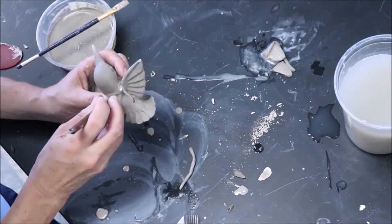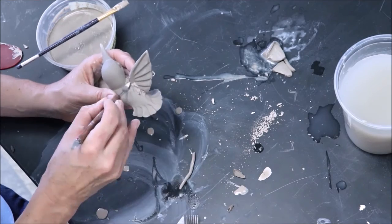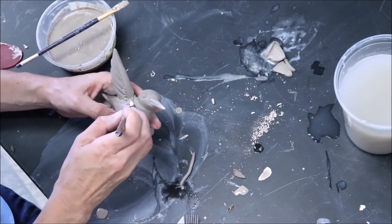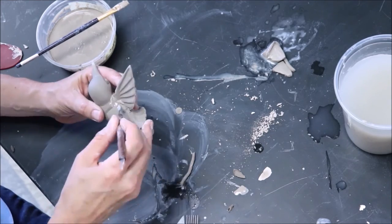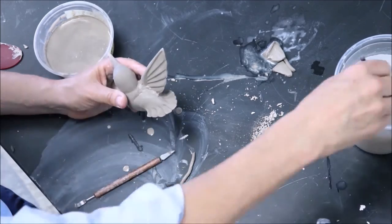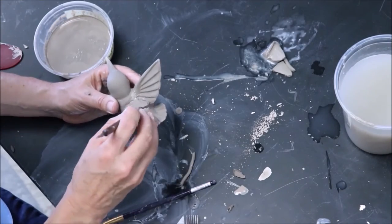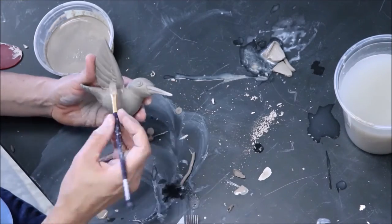When we add a deflocculant to the slip, it will alter all the clay particles, giving them the same magnetic charge, resulting in slip that instantly thins, since the clay particles are now repelling each other. It's really fun to watch because it happens instantly.